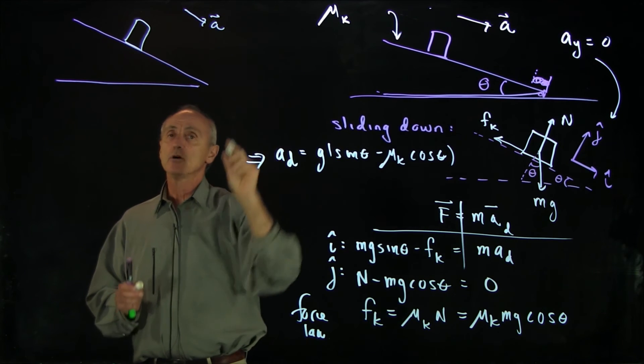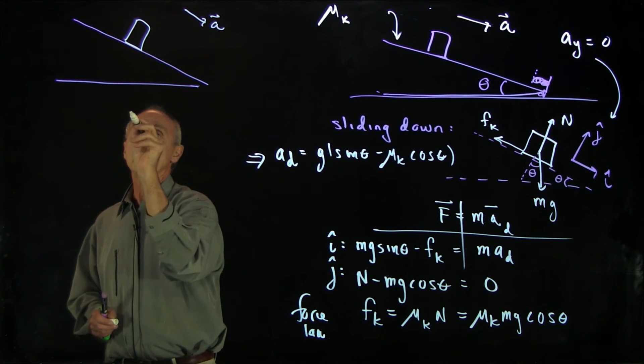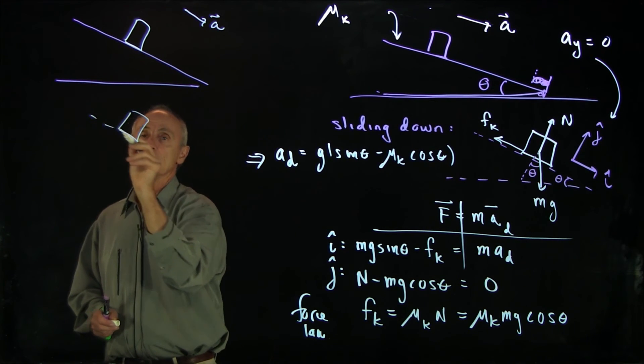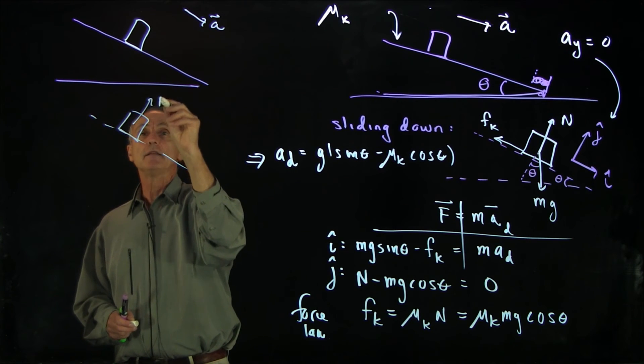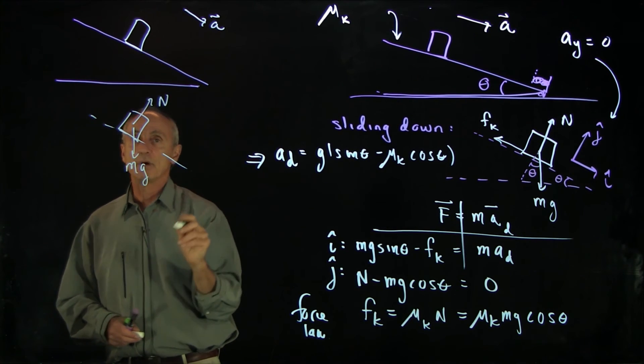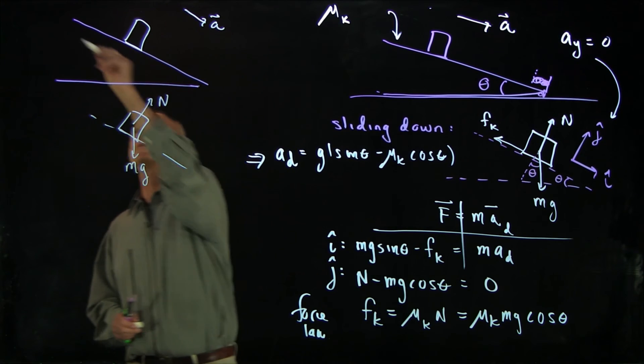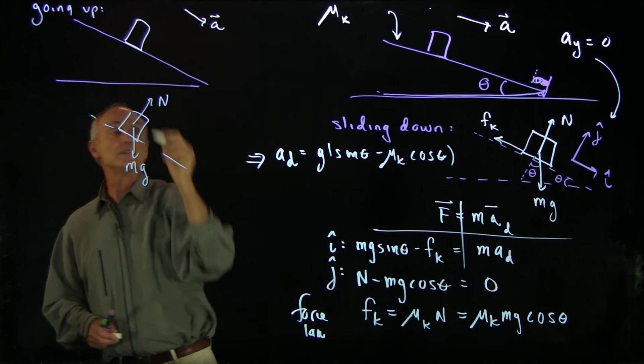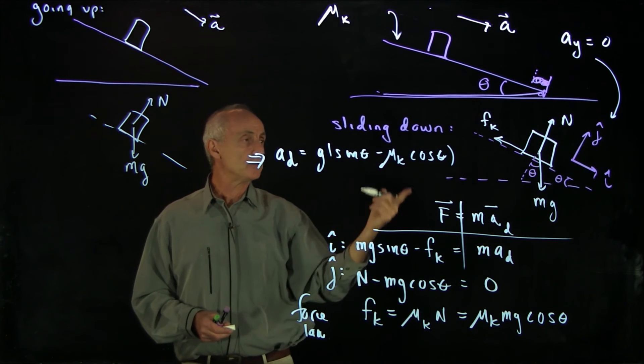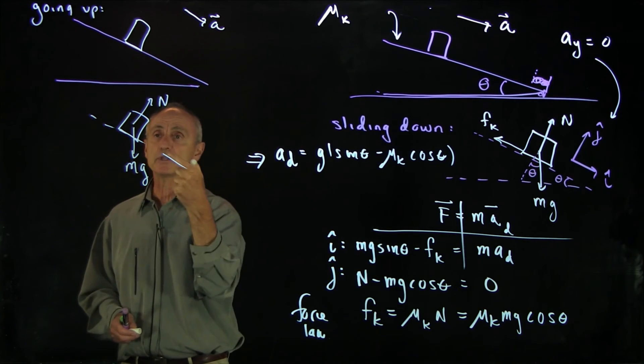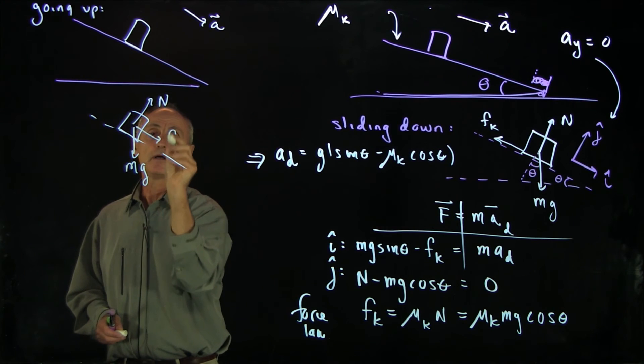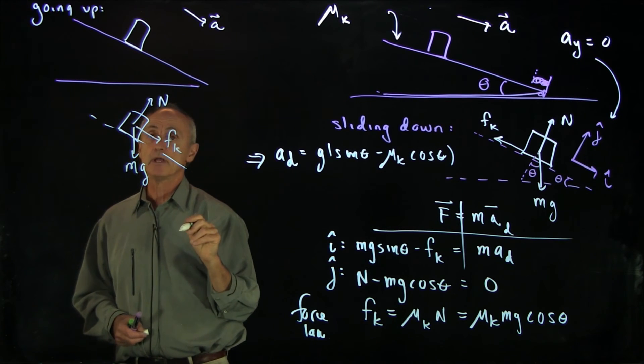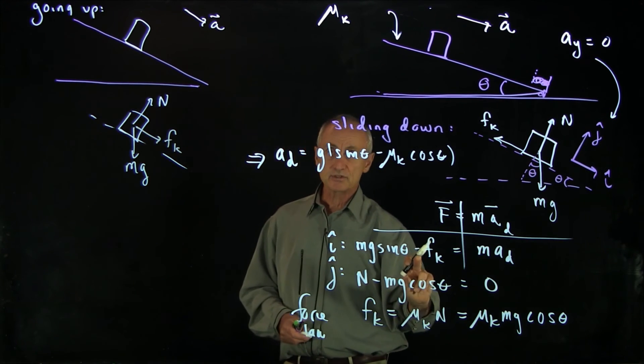We still have n, we have mg, but now the crucial point is this is going up. The crucial point here is that the kinetic friction is always opposing the motion. So when the block is sliding up, the kinetic friction is down, and all that we have is a sign change here. This is now plus.